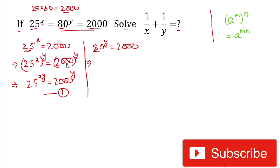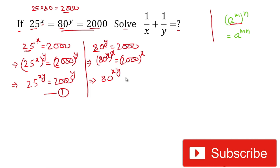Now for making the power the same as xy, we multiply 80 to the power y by power x. So the right-hand side 2000 is also raised to the power x. Using the same formula a^(mn), we can write 80 to the power xy equals 2000 to the power x. We take this as Equation 2.